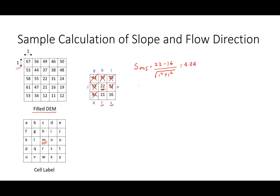Now let's calculate the slope from M to R. M has elevation 22 minus 21, and these cells are located vertically adjacent, so we use a distance of 1, which is the cell size. The slope from M to R is 1, and the slope from M to S is 4.24, which means S is the steepest downslope. So the water from M will flow to S, and we can draw the flow direction accordingly.